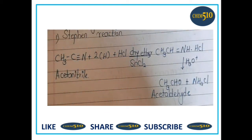Then Stephen's reaction. Alkyl nitrile on reduction with stannous chloride and hydrochloric acid in dry ether gives the corresponding imine hydrochloride, which on acid hydrolysis gives the corresponding aldehyde. This is called Stephen's reaction. In this reaction, acetonitrile is the alkyl nitrile, which reacts with SnCl₂ and HCl in presence of dry ether to form imine hydrochloride, and then on hydrolysis gives acetaldehyde.